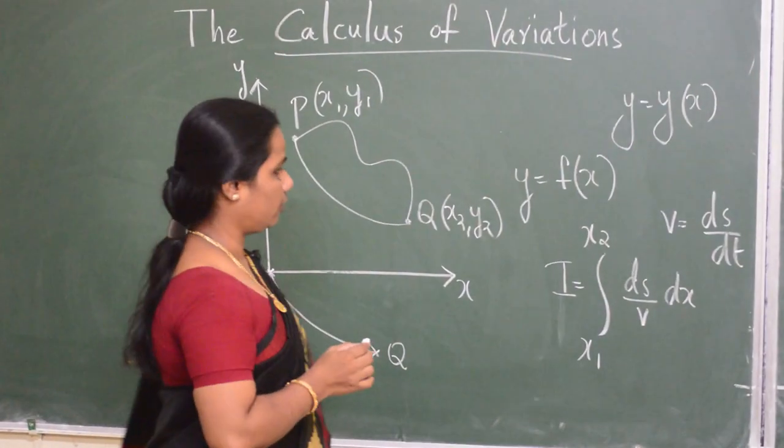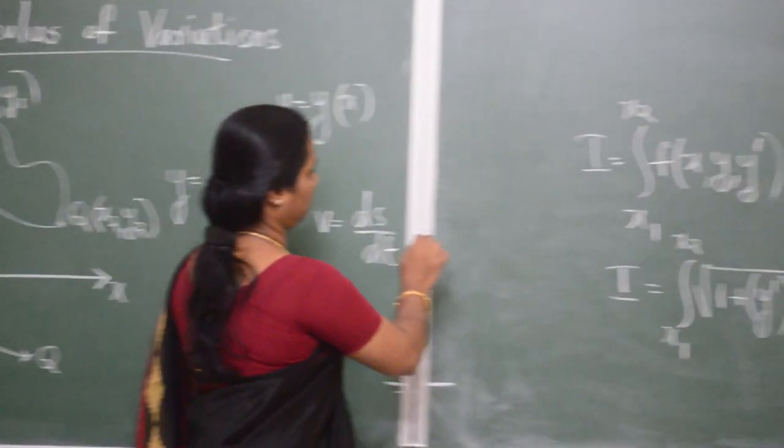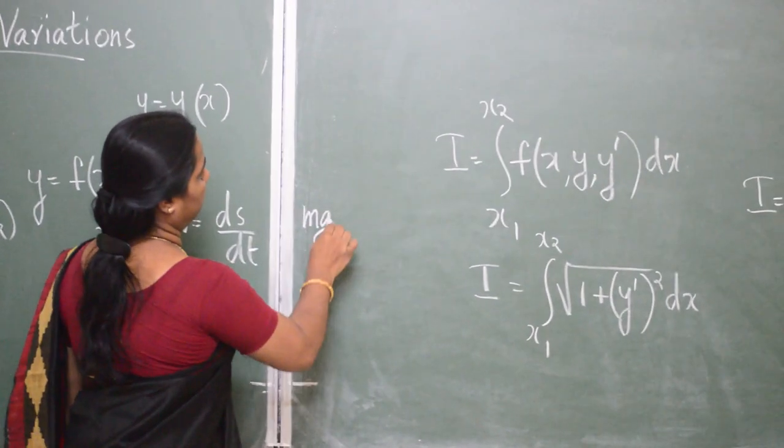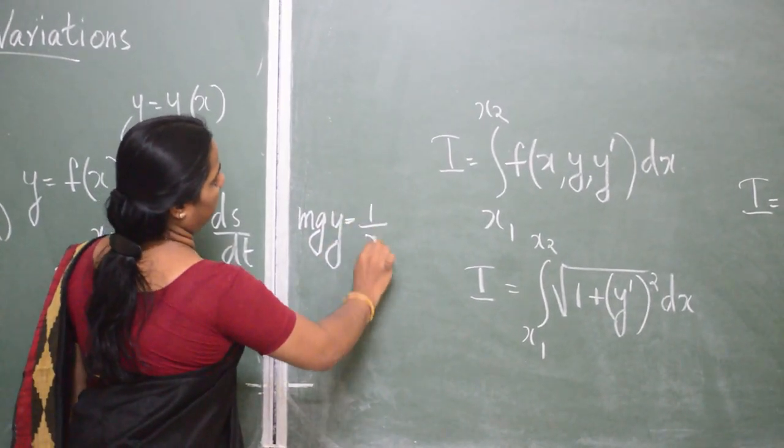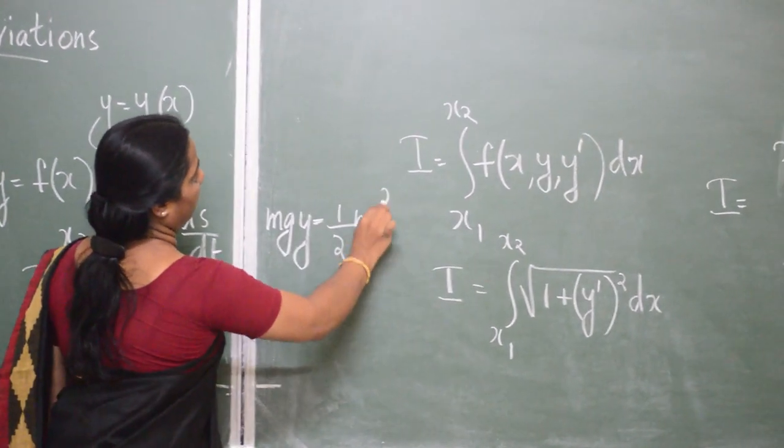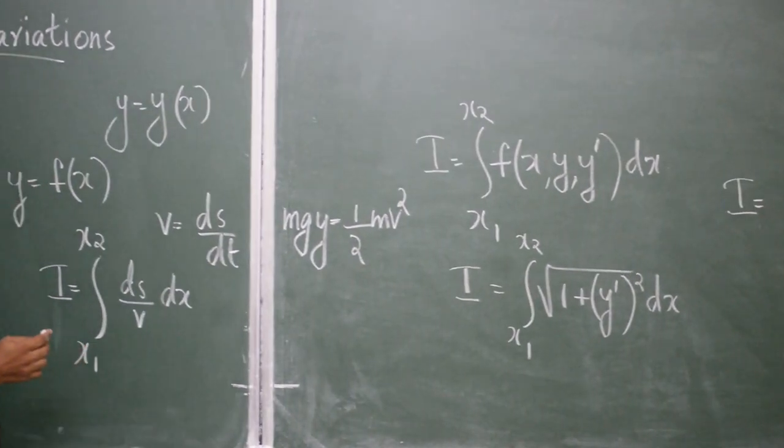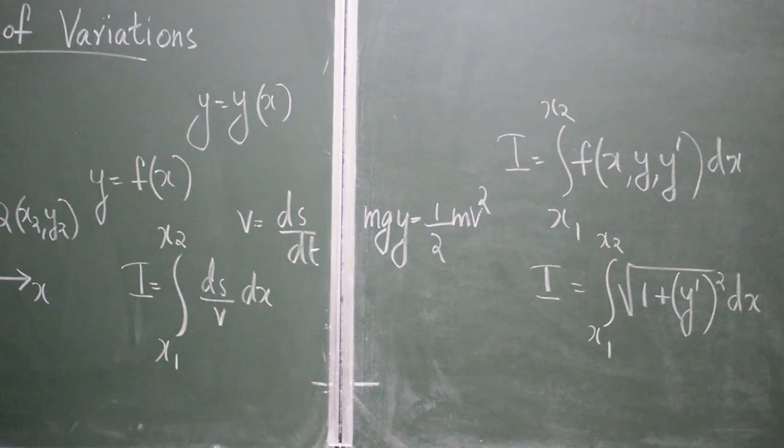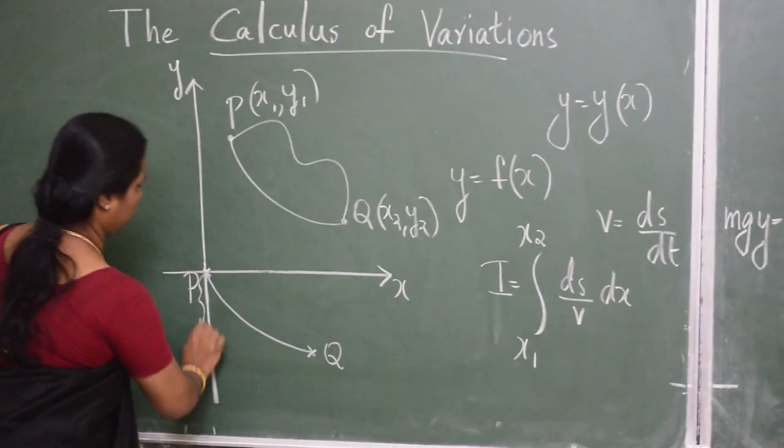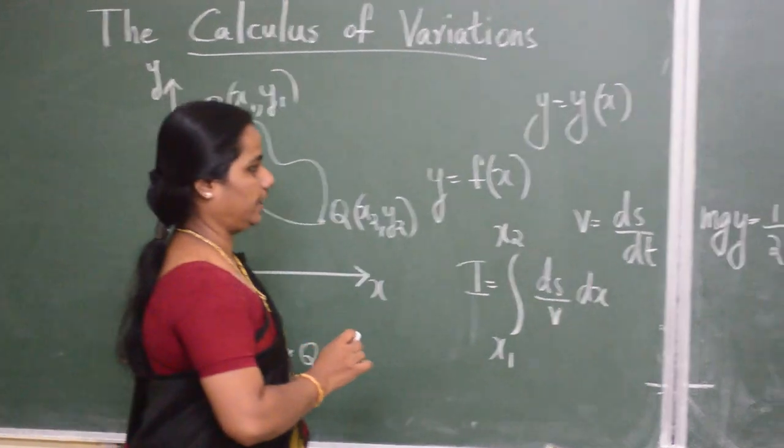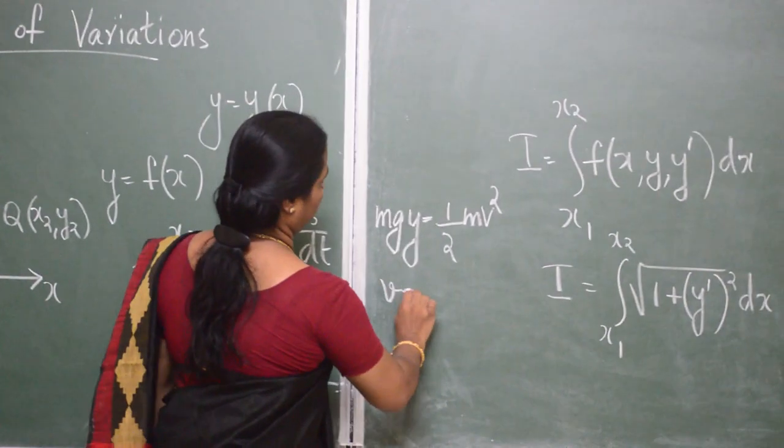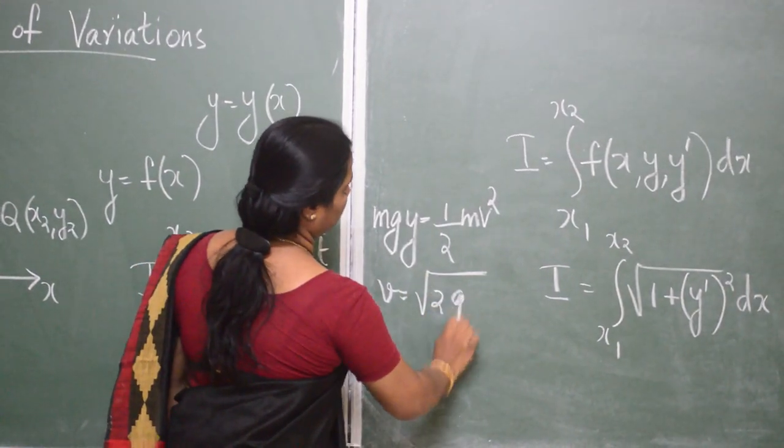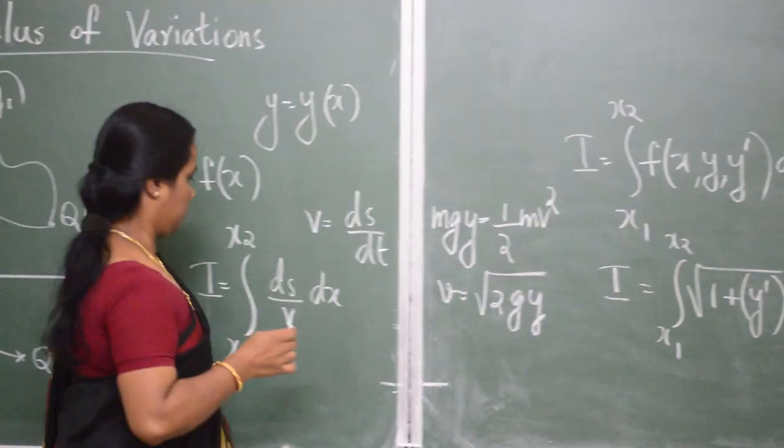from the law of conservation of energy, mgy equal to half mv square. That is, gain in kinetic energy is equal to the loss in potential energy. From this, we get v equal to root of 2gy.